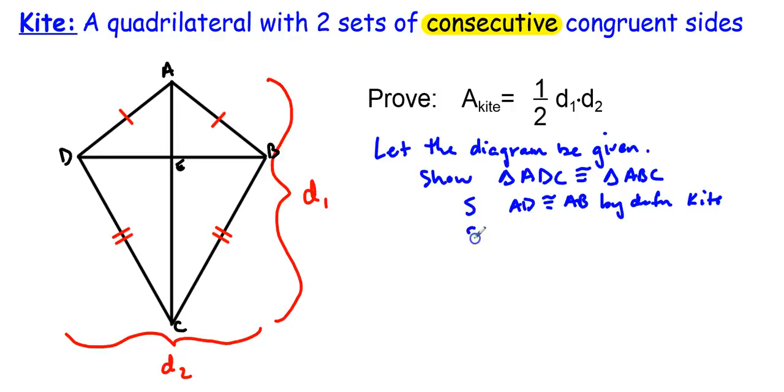So, by the definition of a kite, we can say the same thing, or that those two pieces are congruent. Next one is DC and BC. And that's by that same reasoning, definition of a kite, two consecutive congruent sides. The last one is just your shared side, and that's diagonal 1, or AC. So, AC is congruent to AC by the reflexive property.